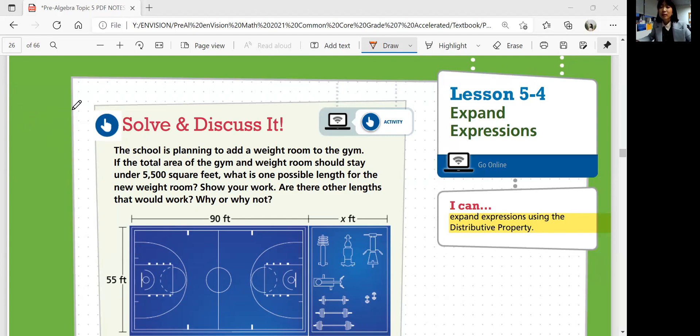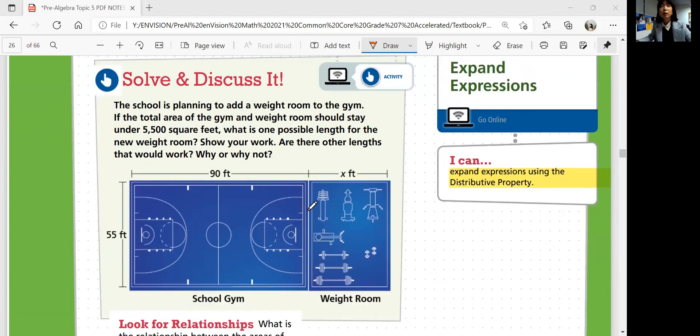Let's start with Solve and Discuss It. The school is planning to add a weight room to the gym. If the total area of the gym and weight room should stay under 5,500 square feet, what is one possible length for the new weight room? Show your work. Are there other lengths that would work? Why or why not?